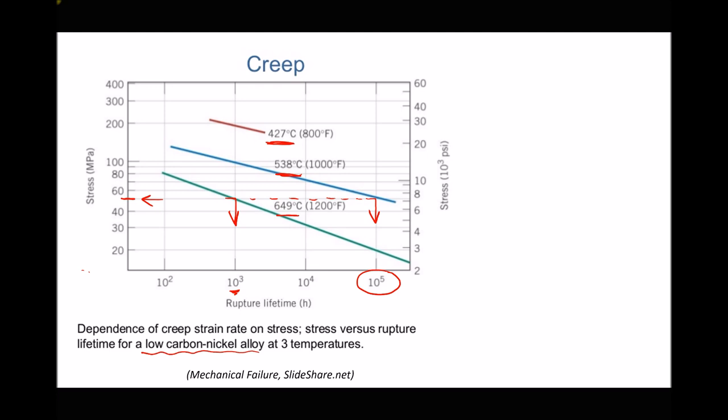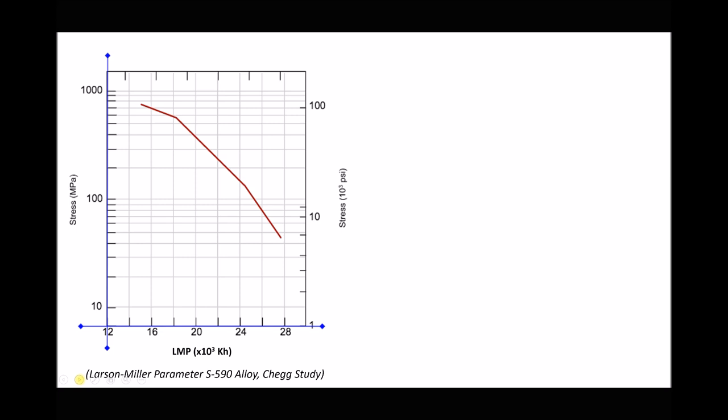So now we can introduce something called the Larsen-Miller parameter. And here we have an example of a Larsen-Miller parameter graph for a specific alloy, S590 alloy. Now S590 alloy is a steel that's specifically designed for high temperature applications. And as we've just seen, temperature has a huge impact on rupture lifetime.